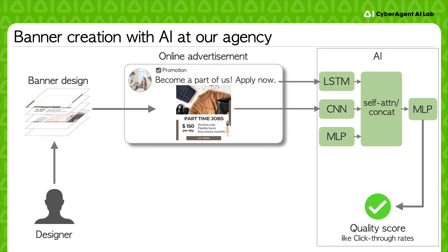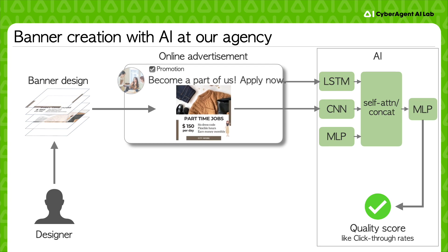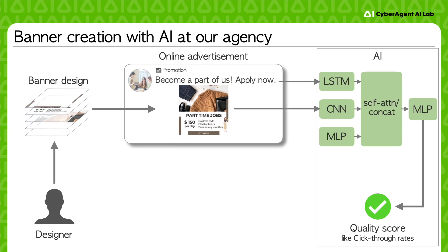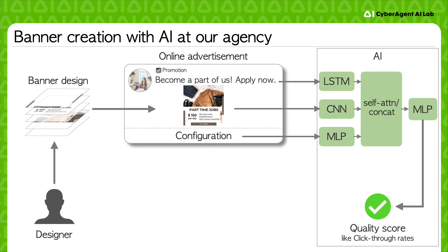The input of the model is a banner image, associated text, and delivery configuration, such as audience target. Then it predicts the quality score. Our AI-powered system aims to help designers reach the required quality before the actual delivery.